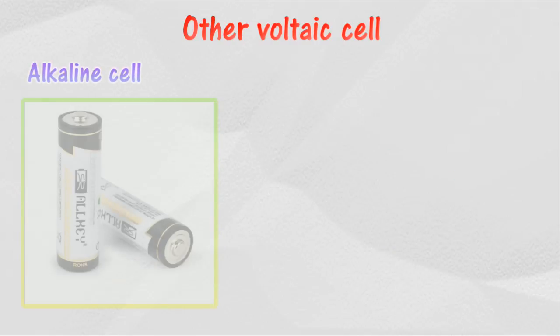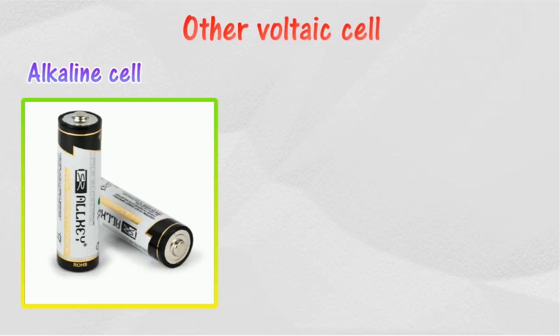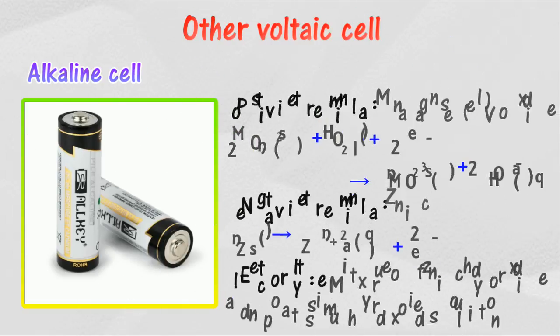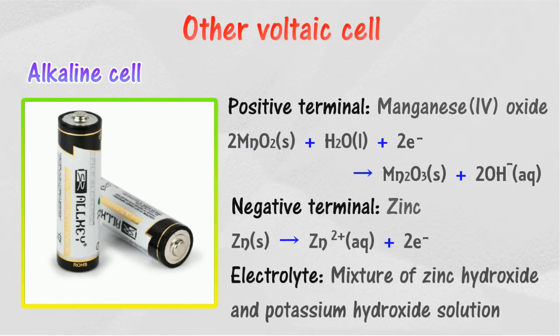For alkaline cell, the negative terminal is zinc while the positive terminal is manganese(IV) oxide. The electrolyte used is the mixture of zinc hydroxide and potassium hydroxide solution. Alkaline cell is used in watches and cameras.